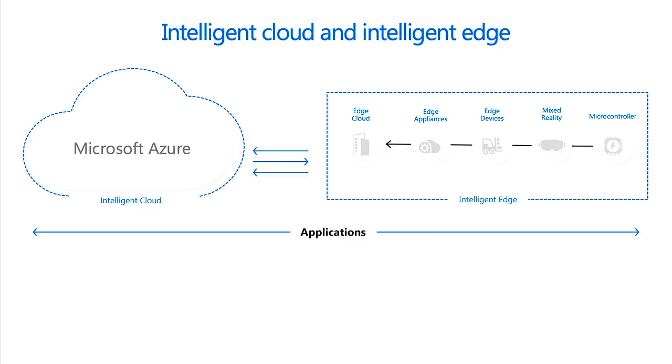Let's double-click into that and understand how these end-to-end solutions get built and what Microsoft is doing to make it easier for customers to build solutions with this new paradigm. Enabling intelligent cloud and intelligent edge solutions requires a completely new category of distributed and connected applications. These cloud and edge services are built as a unified single solution even though they run in a distributed fashion, taking advantage of cloud scale and edge locality, and can work in both connected and disconnected states.